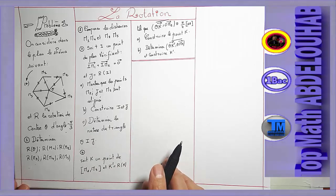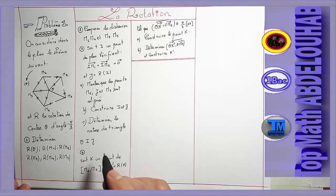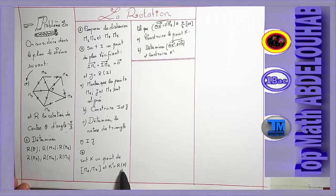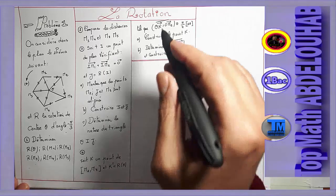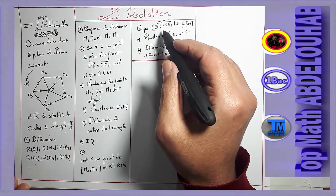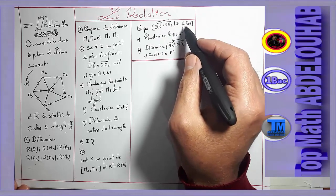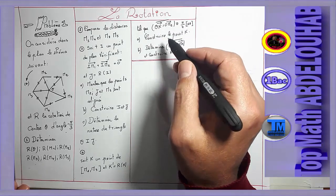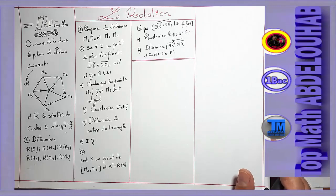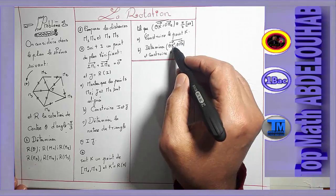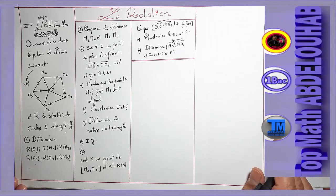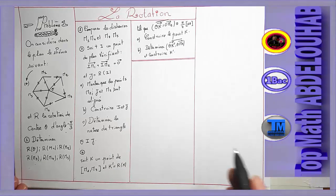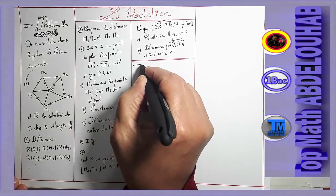Petit B : construire I et J. Déterminer la nature du triangle I, J, O. Quatrièmement, soit K un point du segment M2M3 et K' égale R(K), l'image de K par la rotation R, telle que l'ensemble des mesures de l'angle orienté OK, OM2 est congru à pi sur 4 modulo pi. Petit A : construire le point K. Petit B : déterminer l'ensemble des mesures de l'angle orienté OK', OM3, et construire le point K'.